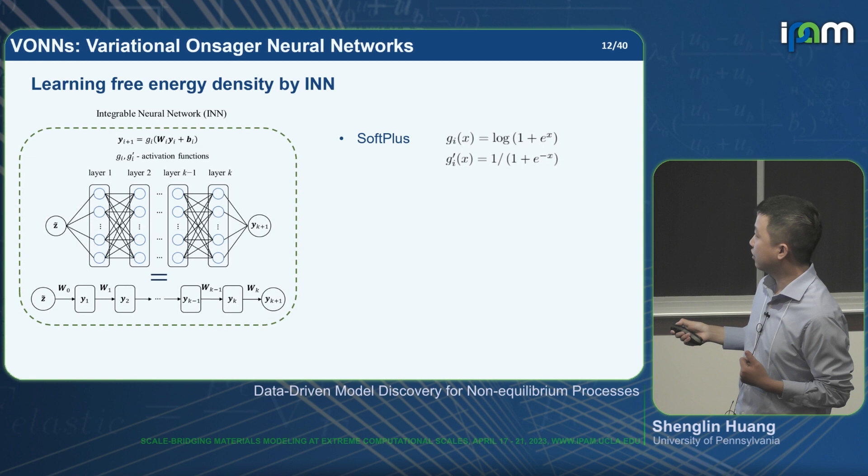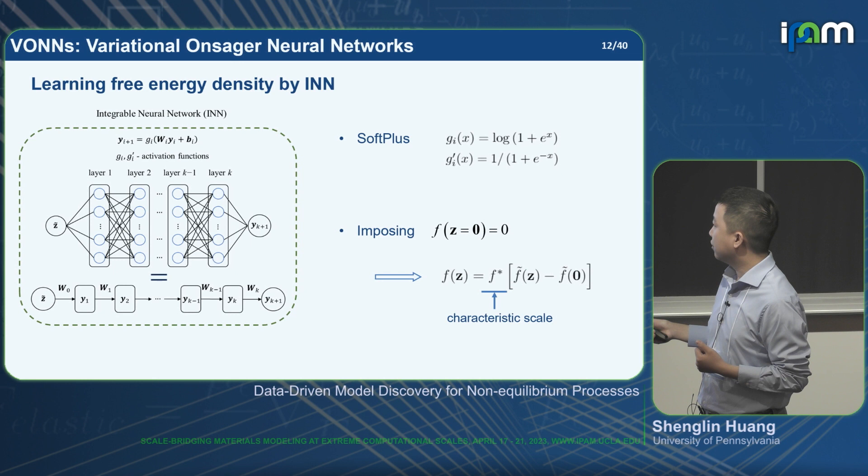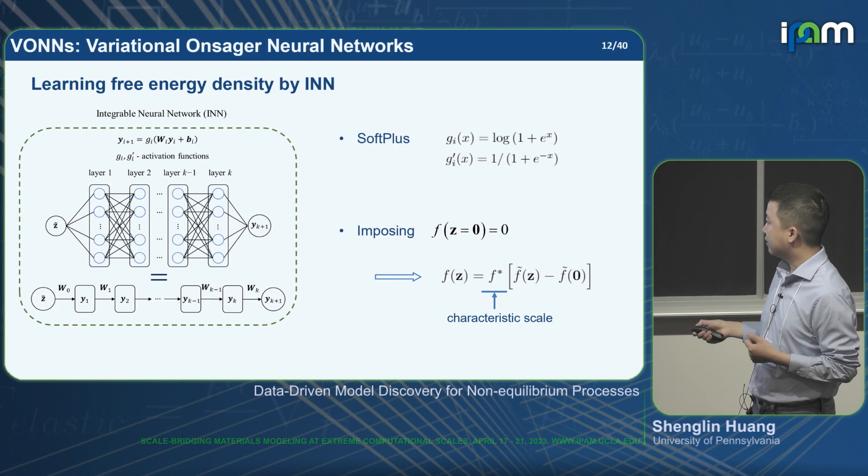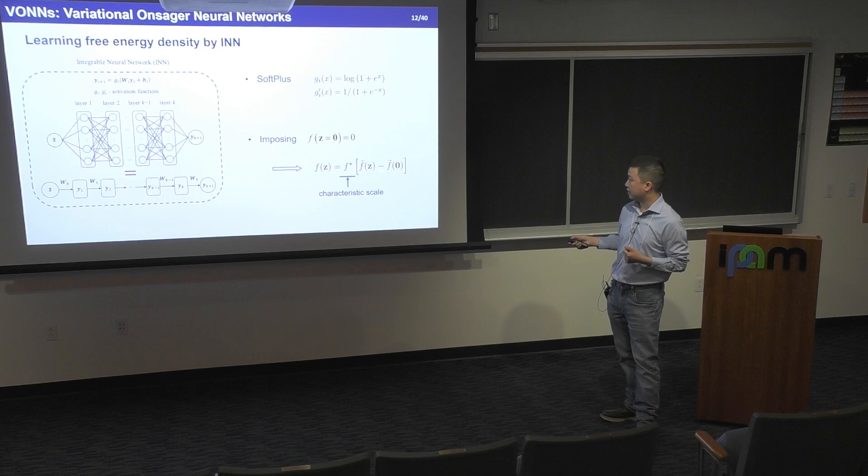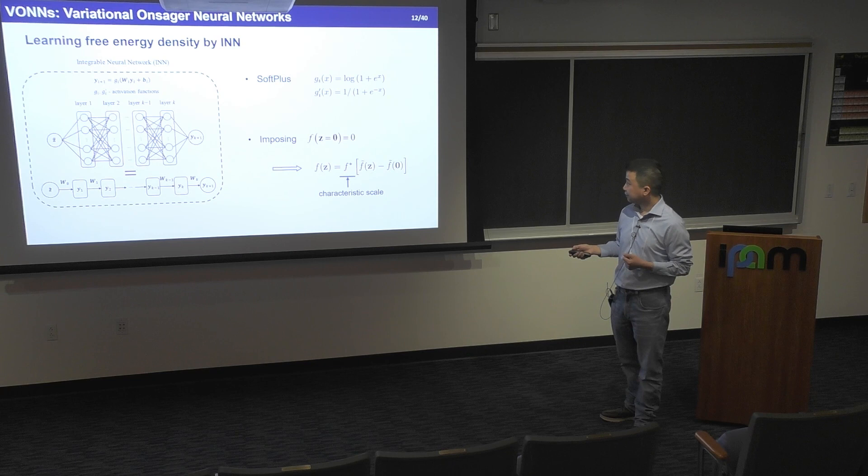We also impose a zero point for the free energy with a simple trick: if f-tilde is the direct output of the neural network, we subtract the zero point, and the result f_z is the free energy we want.